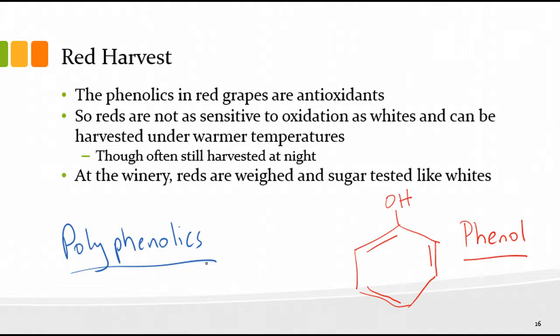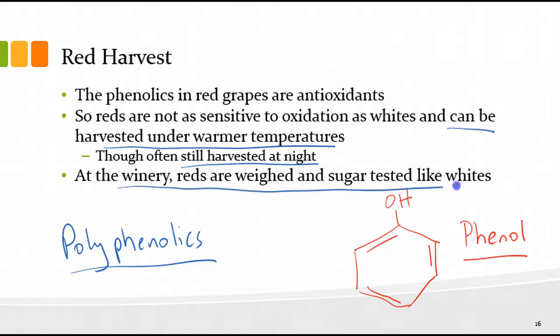Because of their higher antioxidant capacity, reds can be harvested under warmer temperatures, though we often still harvest at night to preserve freshness. When we get to the winery, the process starts with reds being weighed and sugar-tested just like whites.